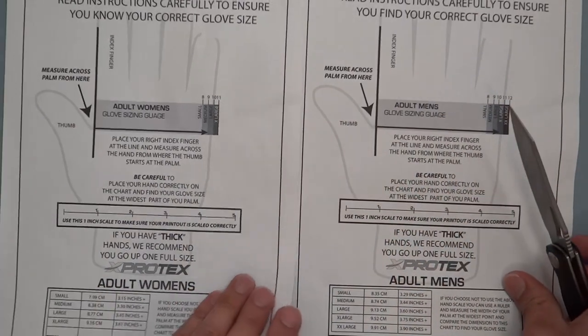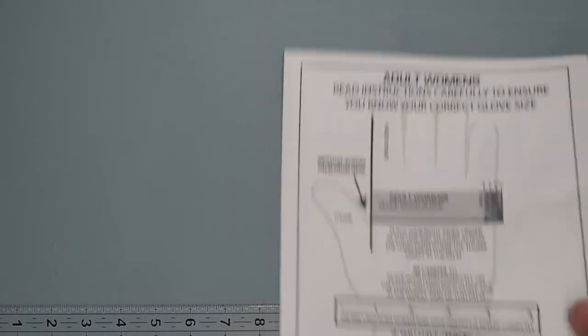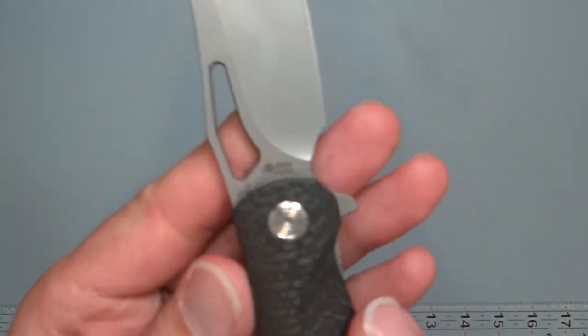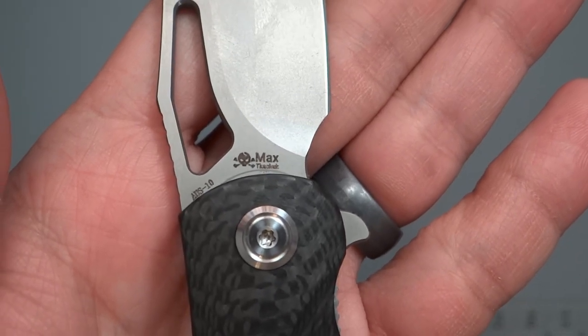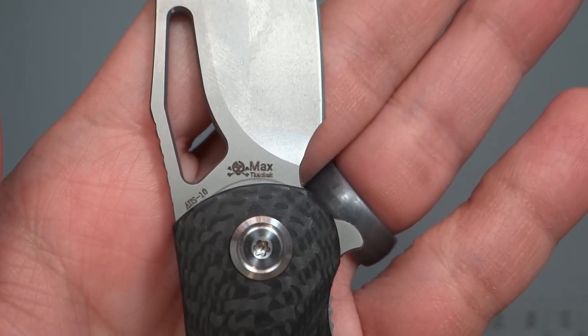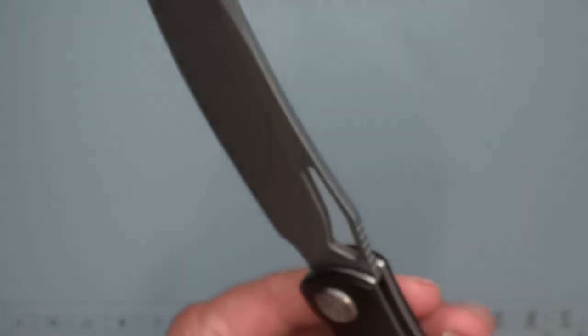You do have the maker's mark on the knife too, if you might be able to see that. So that's going to be his maker's mark there. You'll find that on some other knives as well.